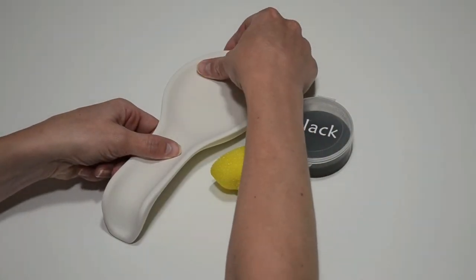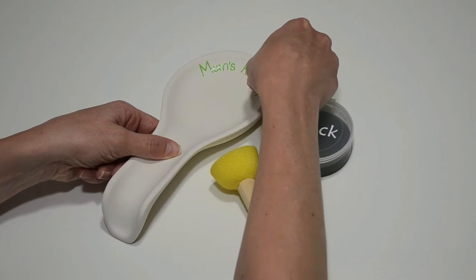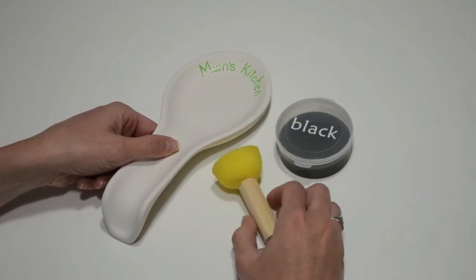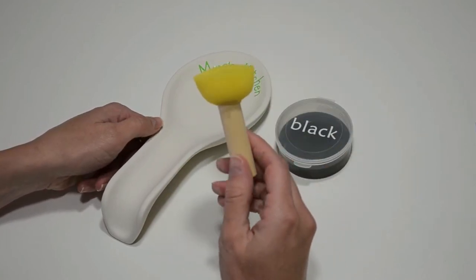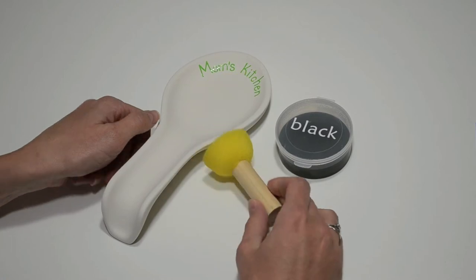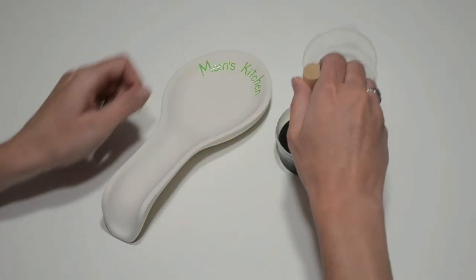Before I begin painting, I'm going to push down on the stickers to ensure that no paint gets underneath. Instead of using a brush, I'm using this sponge, which makes painting a flash and gives full and even coverage to a piece.